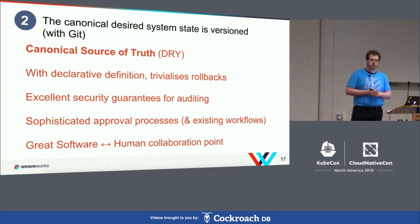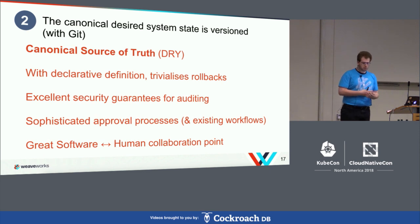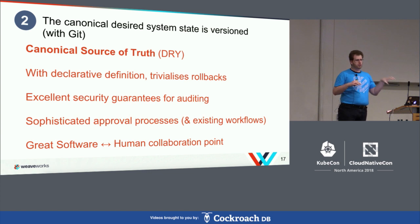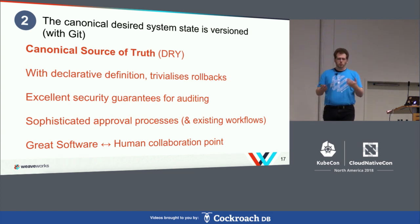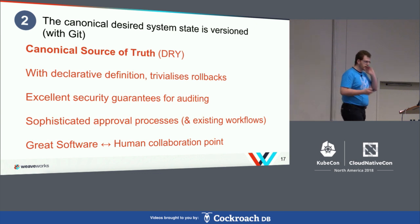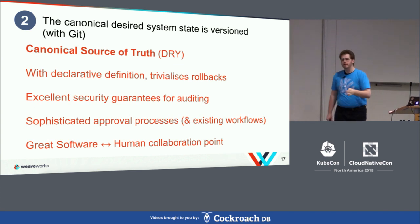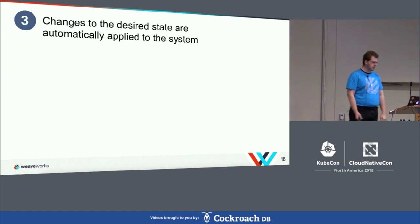You can build very sophisticated approval processes on top of this. We already have pull request and merge request processes — those tools are now available for your application. Beyond human approval, we can integrate machine verification as well. For example, a security auditing tool can approve or deny a merge request. It's a great point for humans and machines to collaborate on code, and this links back to having state declaratively defined — that declaration is readable by both humans and machines.